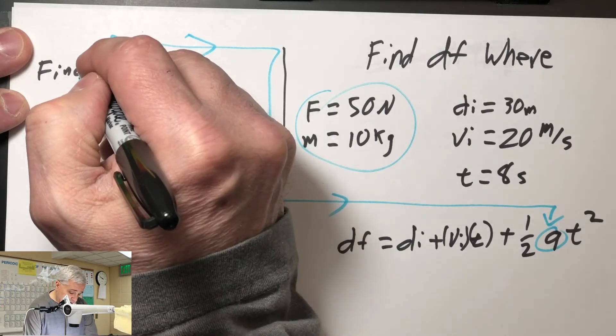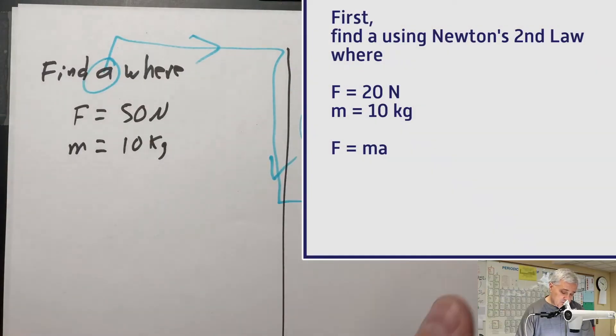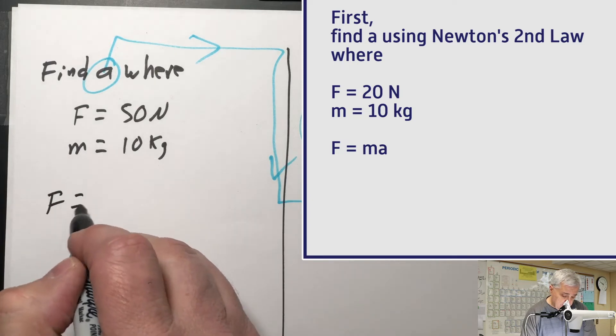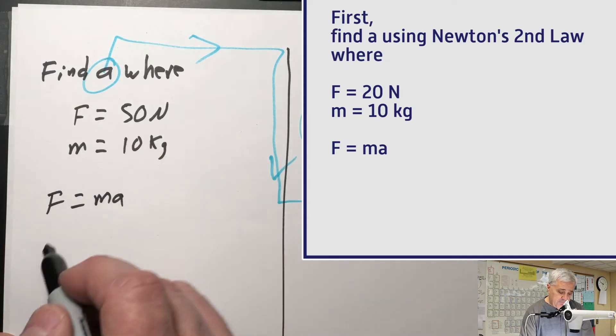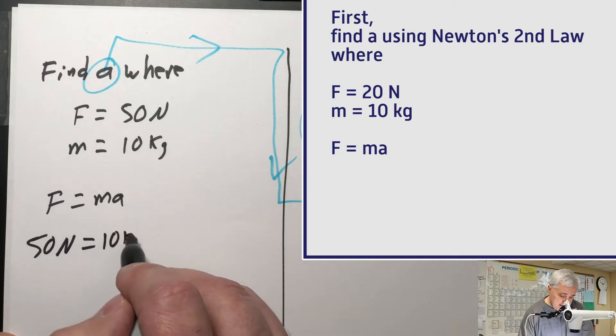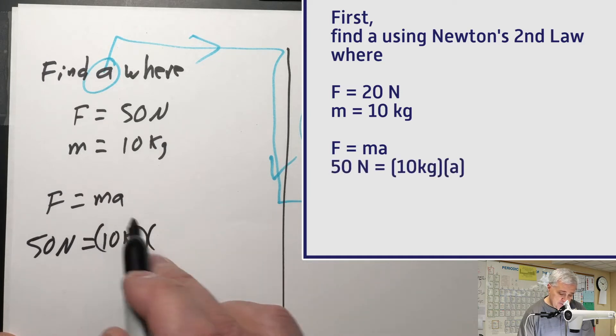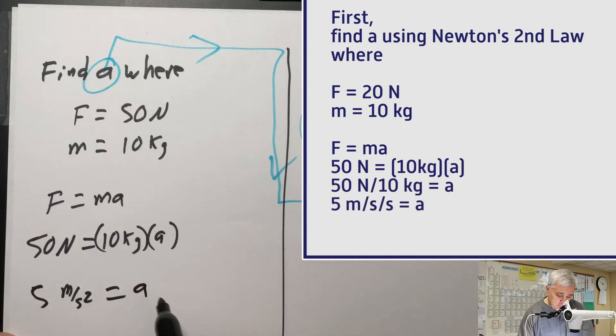Find a where f equals 50 and m equals 10 kilograms. f equals ma, that's the relationship between force, mass, and acceleration. So putting 50 in, 50 newtons equals 10 kilograms times a. I'm looking for a. Do that thing where we divide, newtons divided by kilograms. Newtons divided by kilograms is meters per second squared. 50 divided by 10 is 5. 5 equals a.